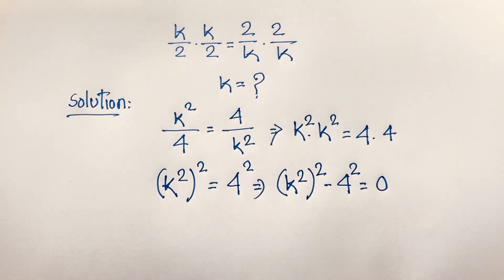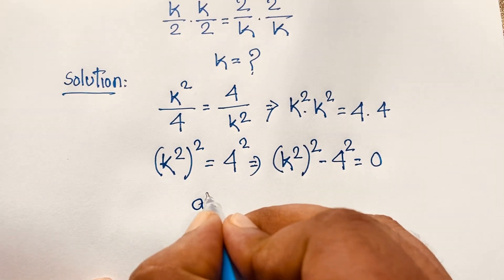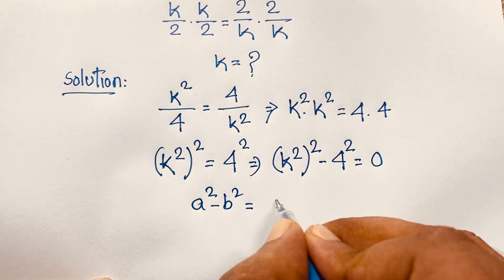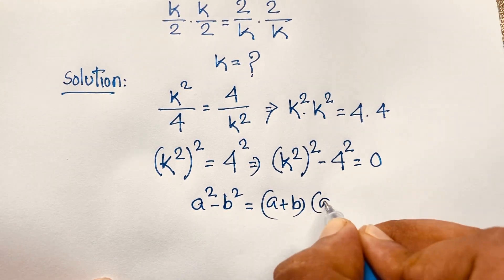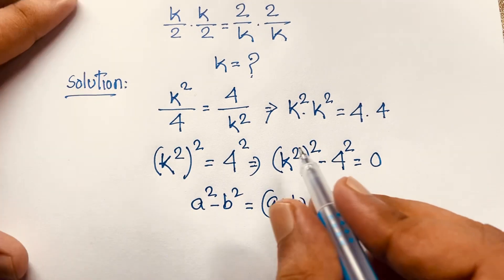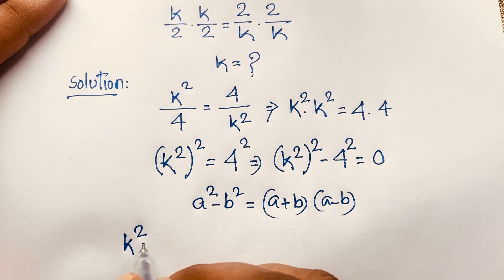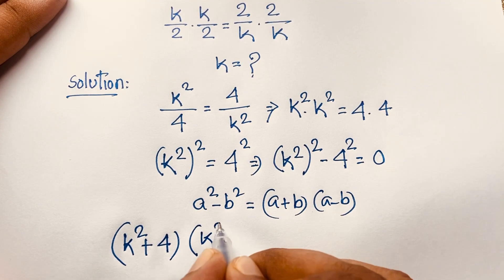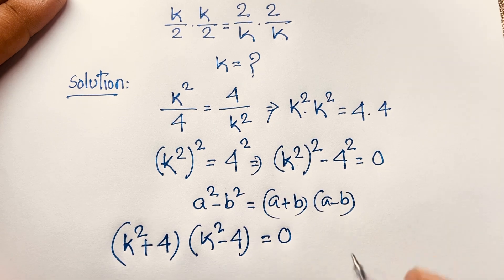Now I apply the difference of squares formula: a squared minus b squared equals a plus b times a minus b. Applying this identity here gives us k squared plus 4, times k squared minus 4, equals 0.